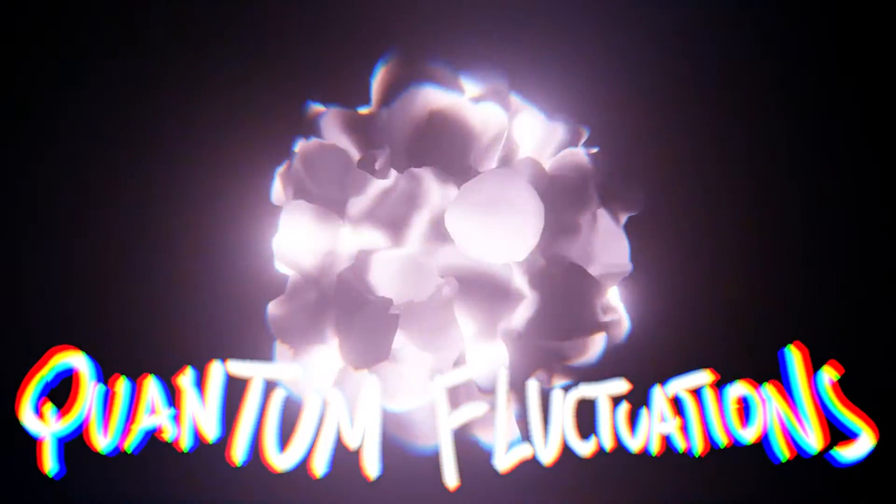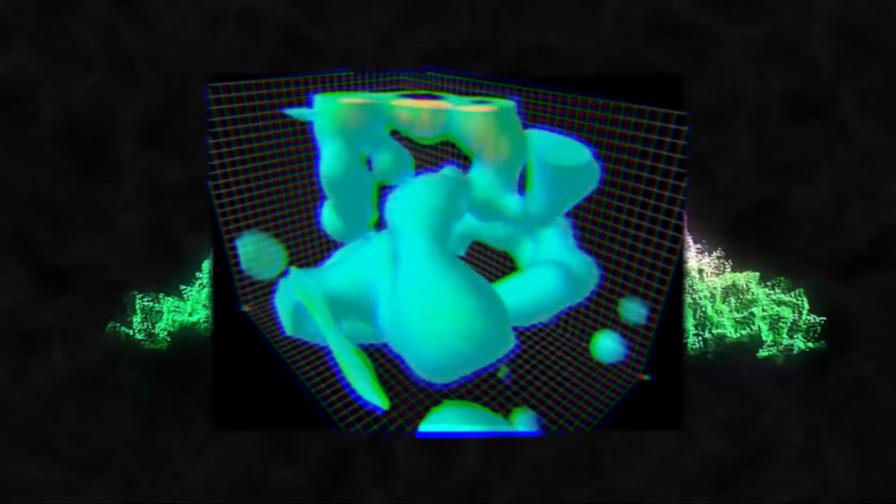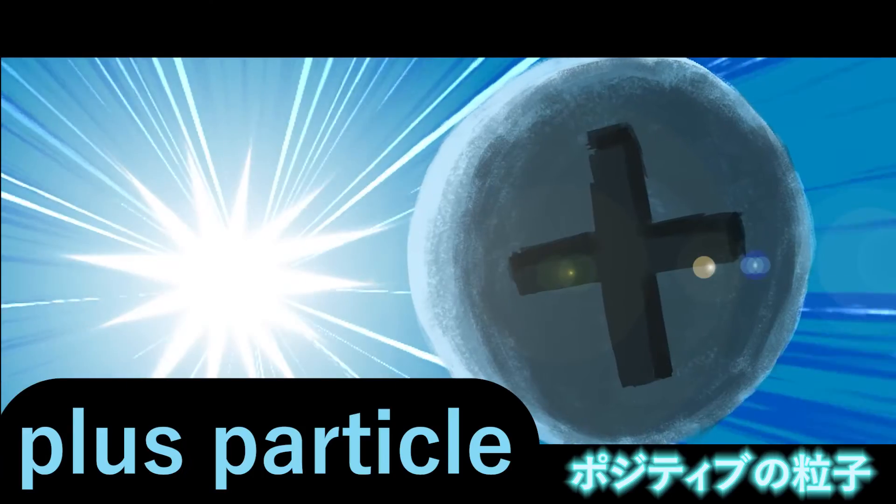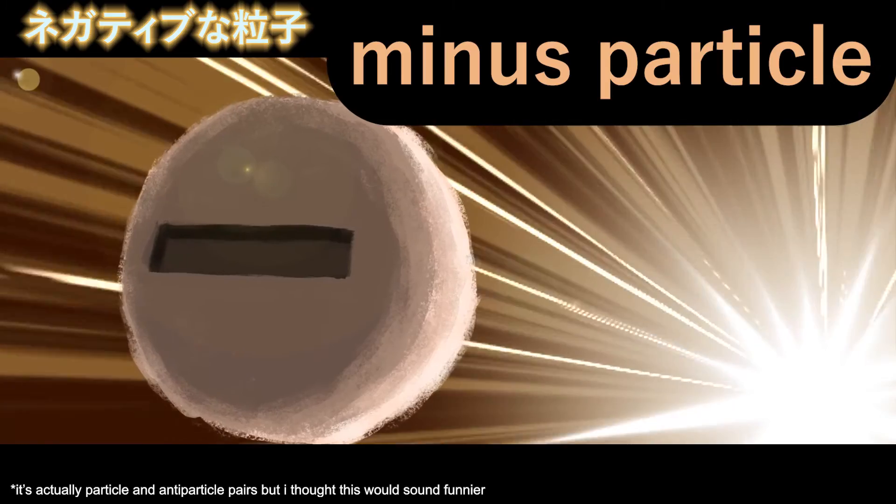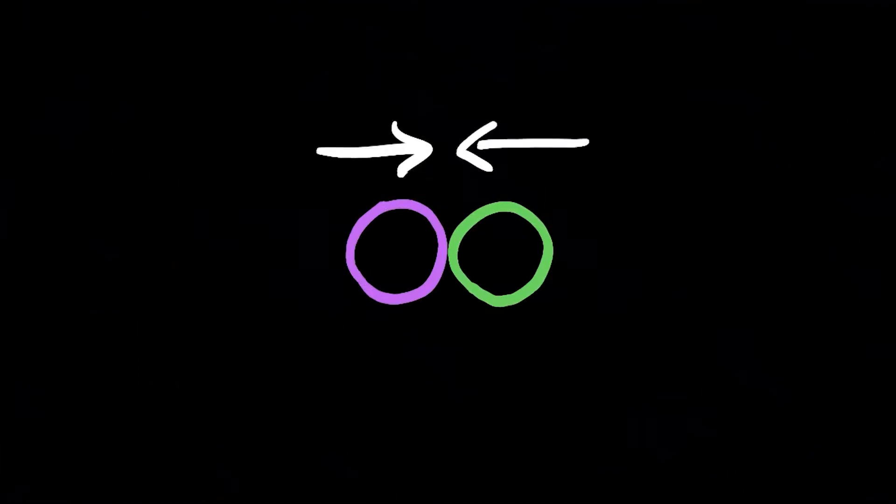Quantum fluctuations are funky. They're weird energy bubbles that pop up for no reason. But we got virtual particles, and it's got diversity. We got the plus particle and the minus particle in a vacuum. Their main purpose in life is to touch each other. When that happens, they die, releasing energy. Yeah, that's pretty virtual.